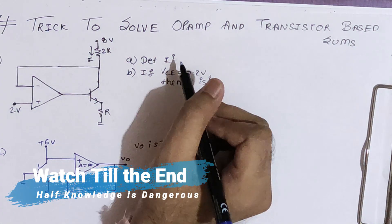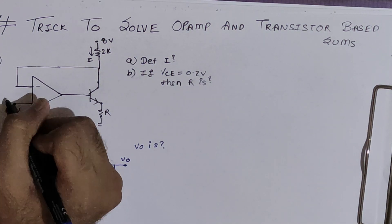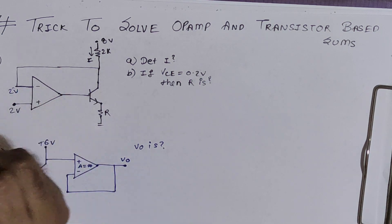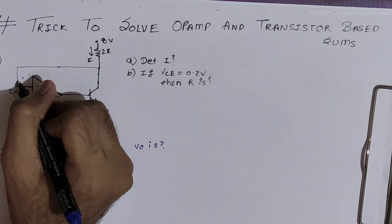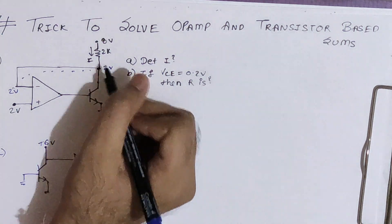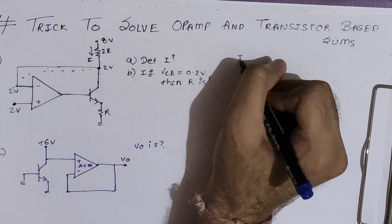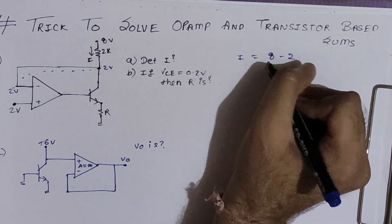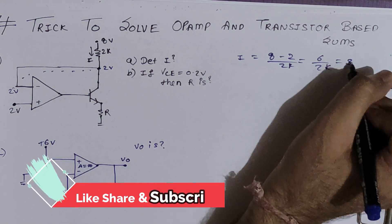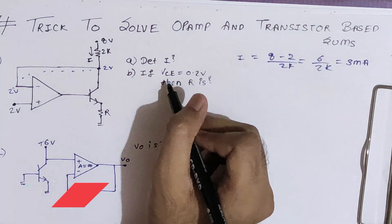We have to find the current I on this side. We can use the virtual ground concept to get the voltage here. If the voltage is 2V at one terminal, then 2V will also appear at the other terminal due to virtual ground, and this 2V is driven to this node. So I = (8 - 2) / 2kΩ = 6/2k = 3 mA.